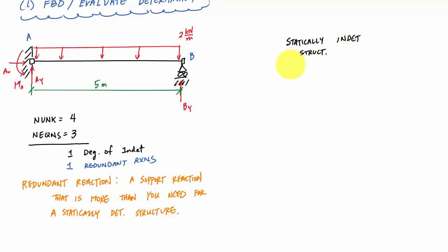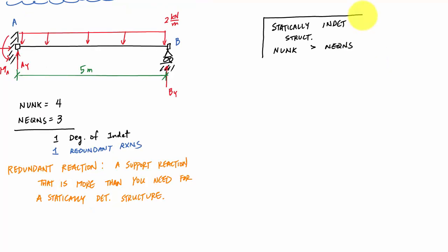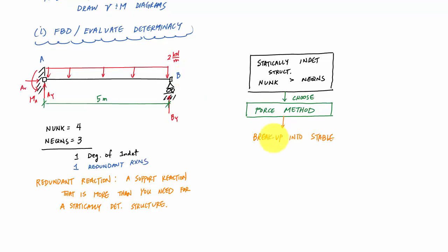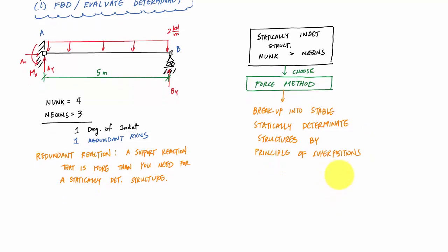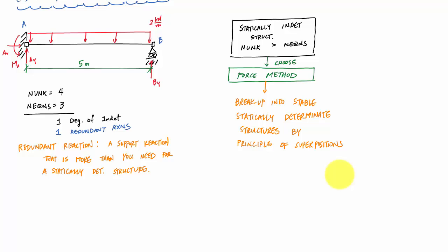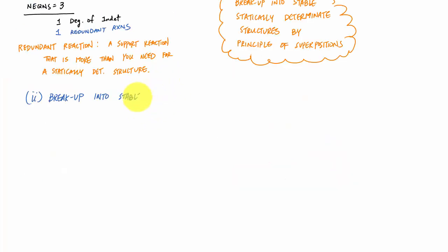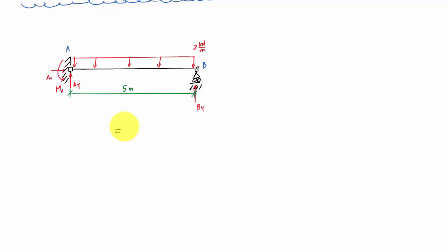So I have a statically indeterminate structure where the number of unknowns is greater than the number of equations. The degree of indeterminacy tells me how many more equations I need, and in the force method these extra equations are the compatibility equations. The first step in the force method is to break up the statically indeterminate structure into stable, determinate structures using the principle of superposition. To do that, I choose my redundant reaction — By in this case — and remove it.